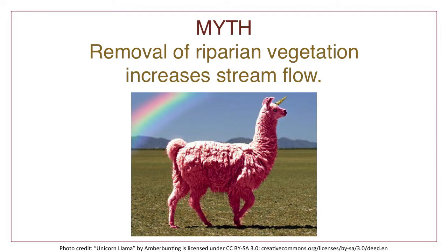The first myth is about removing water-loving trees like sycamores and willows to increase stream flow. In the drought of the 1950s, people thought removing trees along creeks and rivers would result in more water flowing to downstream reservoirs. And it does make some sense — trees and woody plants drink water, so logically, removing these trees would mean that more water stays in the creek. Unfortunately, land managers and resource professionals back then didn't understand the vital role that trees play in maintaining a healthy waterway.